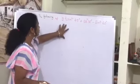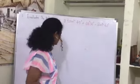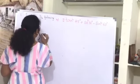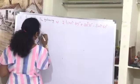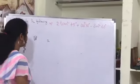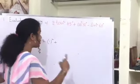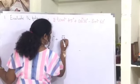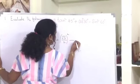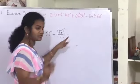The fourth question: evaluate 2 tan squared 45 degree plus cos squared 30 degree minus sin squared 60 degrees. As we know, tan 45 equals 1, so 2 tan squared 45 is 2 times 1 squared. Cos squared 30 degree uses cos 30 equals root 3 by 2 whole square, and sin squared 60 degree uses sin 60 equals root 3 by 2 whole square.